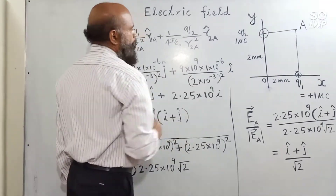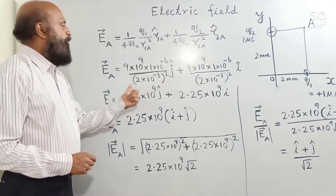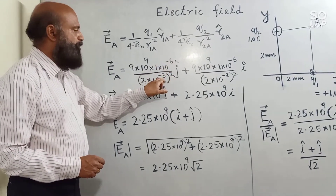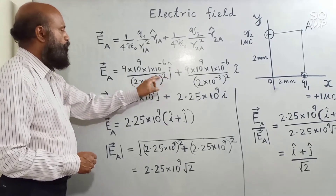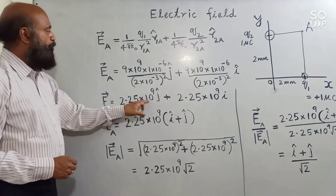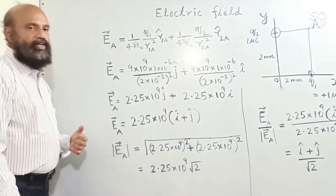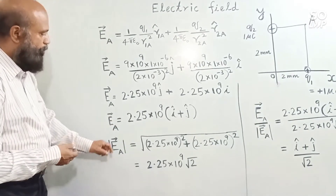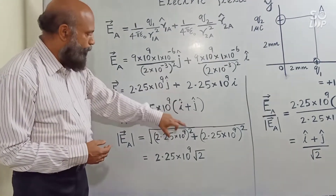The second charge is also 1 microcoulomb and the distance is 2 millimetres. Simplifying: 10⁻³ and 10⁻⁶ cancel appropriately, leaving 9 divided by 2² = 9/4 = 2.25. So we get 2.25×10⁹ for each term. Taking 2.25×10⁹ outside, the total electric field is 2.25×10⁹ (î + ĵ). Since the electric field is a vector quantity, we find its magnitude using the square root of the sum of squares of the components.